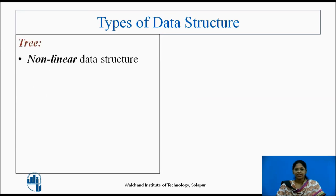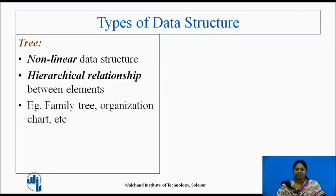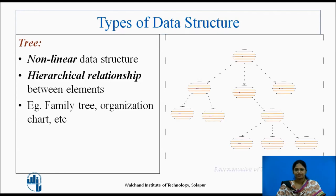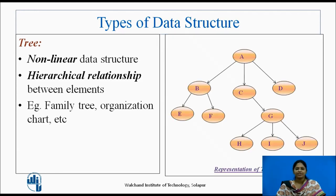Next is the tree. A tree is a non-linear data structure. This structure is mainly used to represent data containing a hierarchical relationship between elements, like family tree, organization chart, etc. Here is an example showing a tree. It is a finite set of one or more nodes such that there is a specially designated node called the root, which is the parent of all the nodes. The nodes originating from the same parent node are called as siblings.